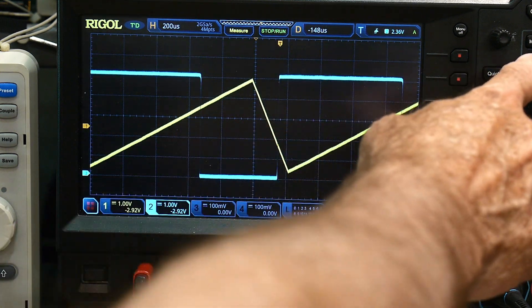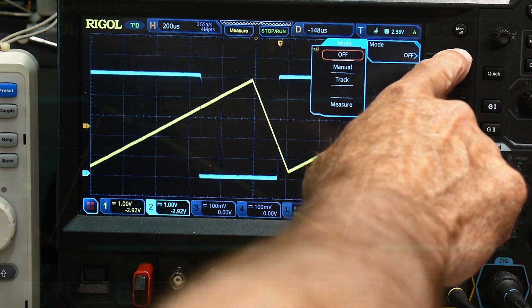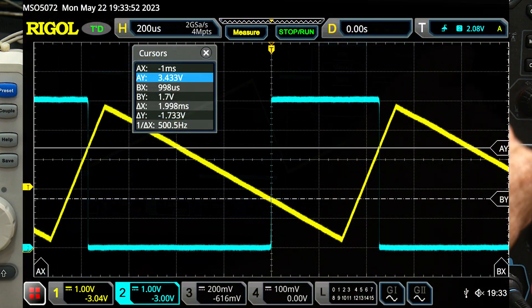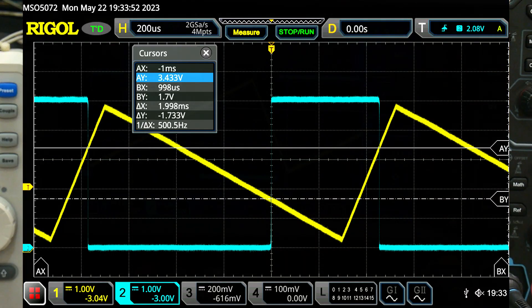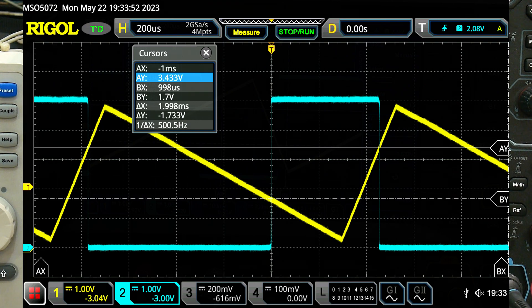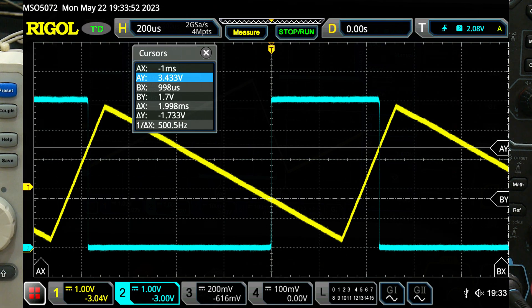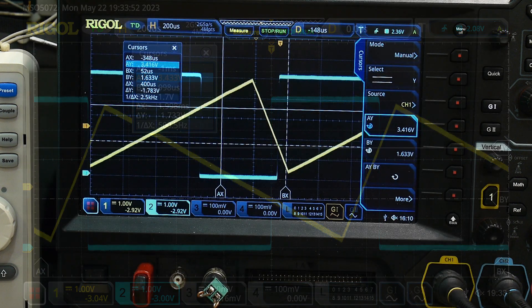We can show that hysteresis by turning on some cursors. Oops. Yeah, there we go. And so we can look at the voltage triggered up and the voltage triggered down. Yeah, it works great.